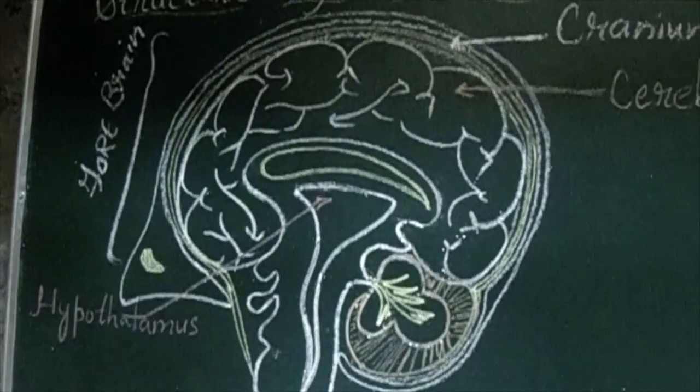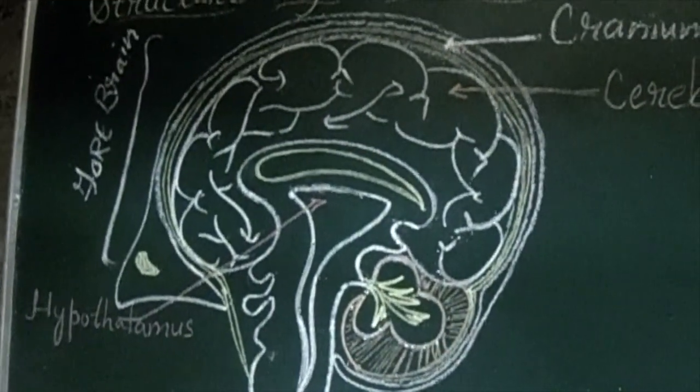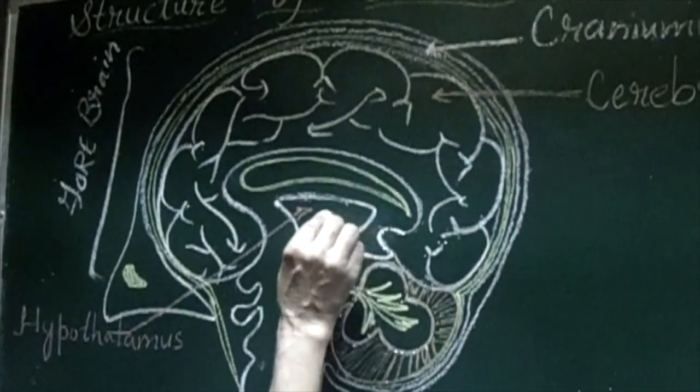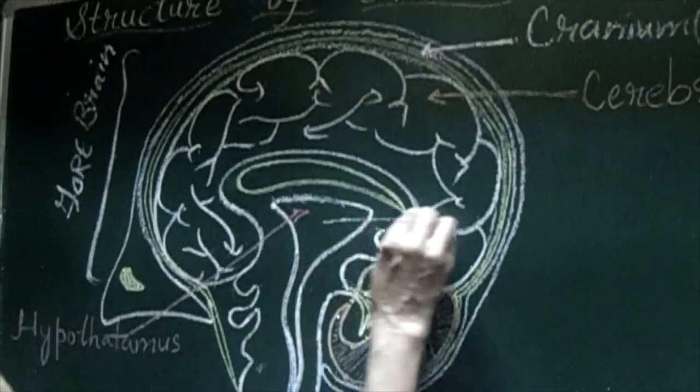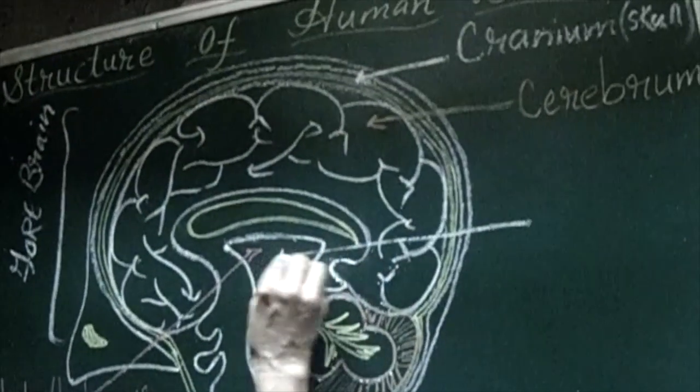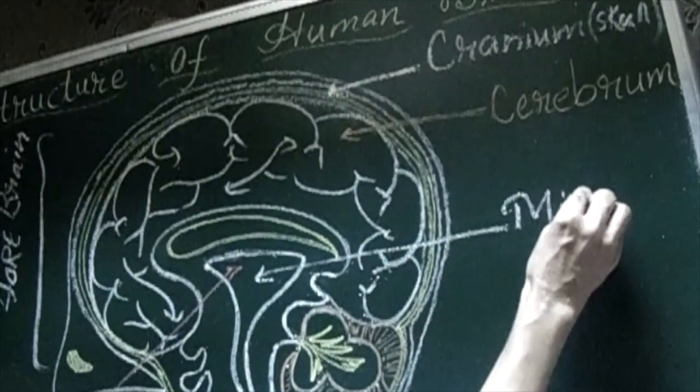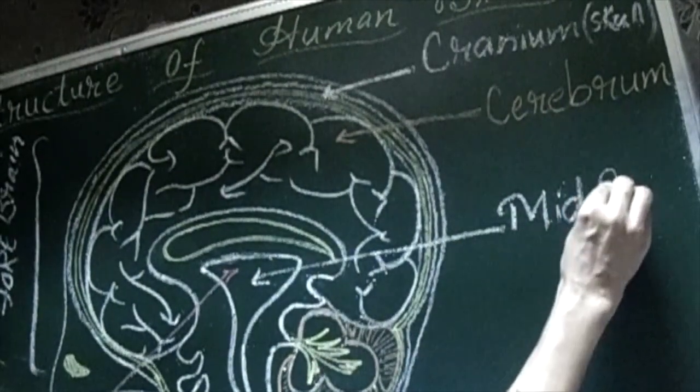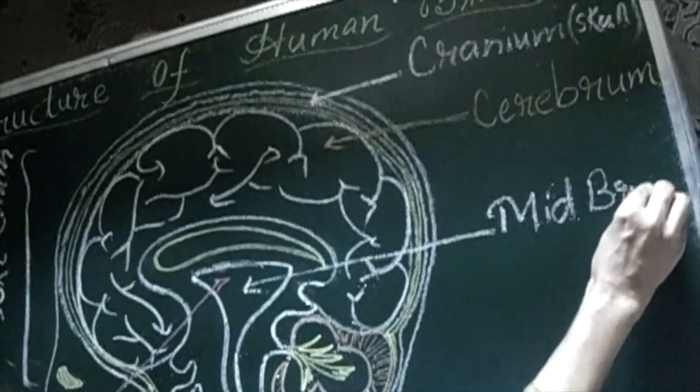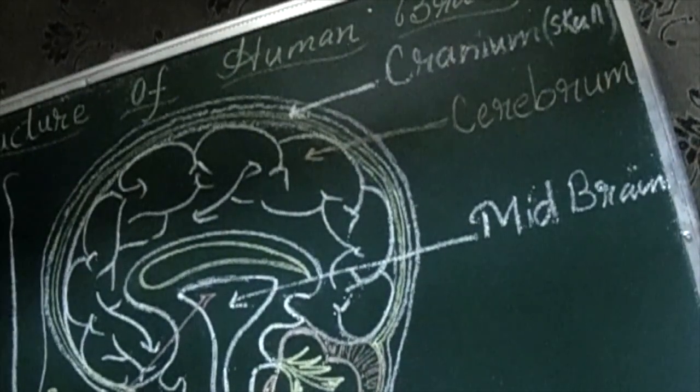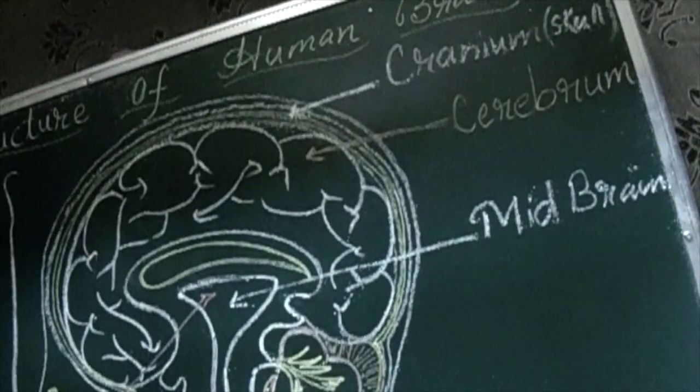Now we have midbrain. Now when we talk about midbrain, midbrain is a very small area. This is the part called midbrain. It is midbrain. Now what is the function of midbrain?